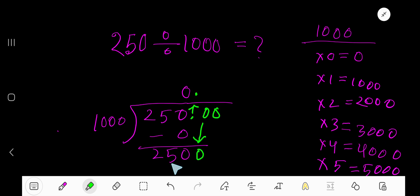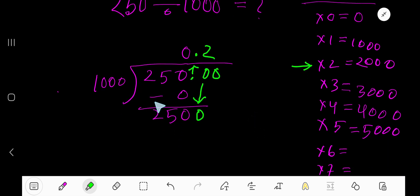Here we have 2500, so we need to stop here. 1000 goes into 2500 2 times. 2 times 1000, which is here, 2000. If you subtract, then you are getting 005, 500.